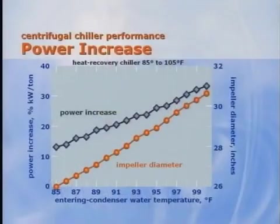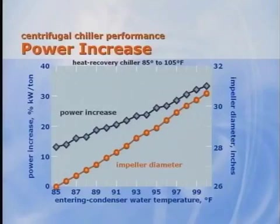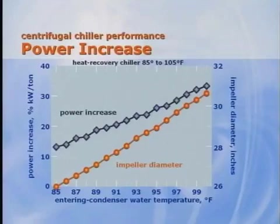For heat recovery, the compressor must produce a larger pressure differential between the evaporator and condenser as compared to a standard cooling application. Since the refrigerant flow rate is indicated by the chiller's cooling capacity, the higher pressure requires a larger diameter impeller or a higher rotational speed if the compressor is gear driven. Starting with 85-degree entering heat recovery temperature, a chiller with the same heat exchanger shells and compressor can maintain the same cooling capacity up to a 100-degree entering heat recovery temperature at the same 20-degree delta T, assuming the impeller diameter was allowed to increase with the higher temperatures.